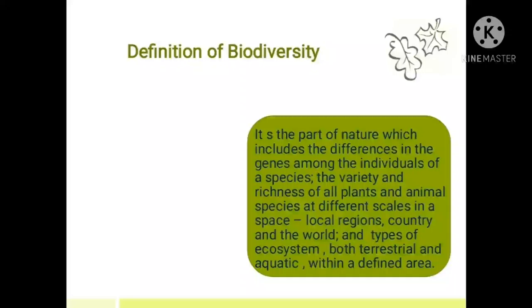The exact definition of biodiversity: it is the part of nature which includes differences in genes among individuals of a species, the variety and richness of all plant and animal species at different scales in space — local regions, country, and the world — and the types of ecosystem both terrestrial and aquatic within a defined area.